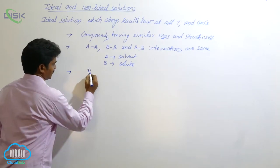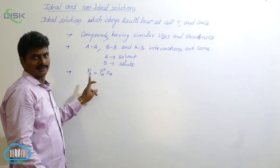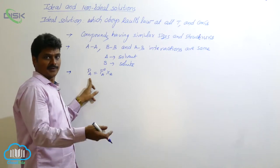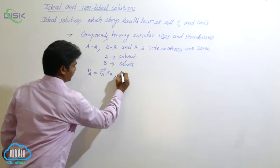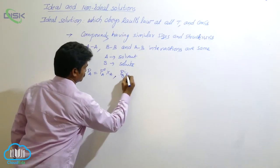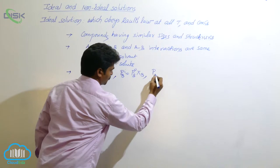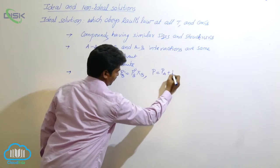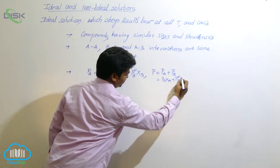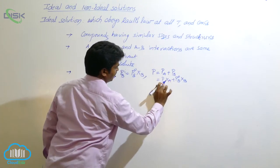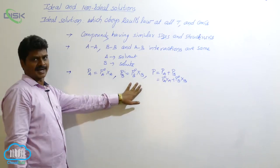Third condition: as per Raoult's law, PA equals P0A times XA — the partial pressure of component A in the mixture equals the product of its vapour pressure and mole fraction. Similarly, PB equals P0B times XB. Therefore, P total equals PA plus PB, which equals P0A·XA plus P0B·XB. These are the conditions for ideal solution.